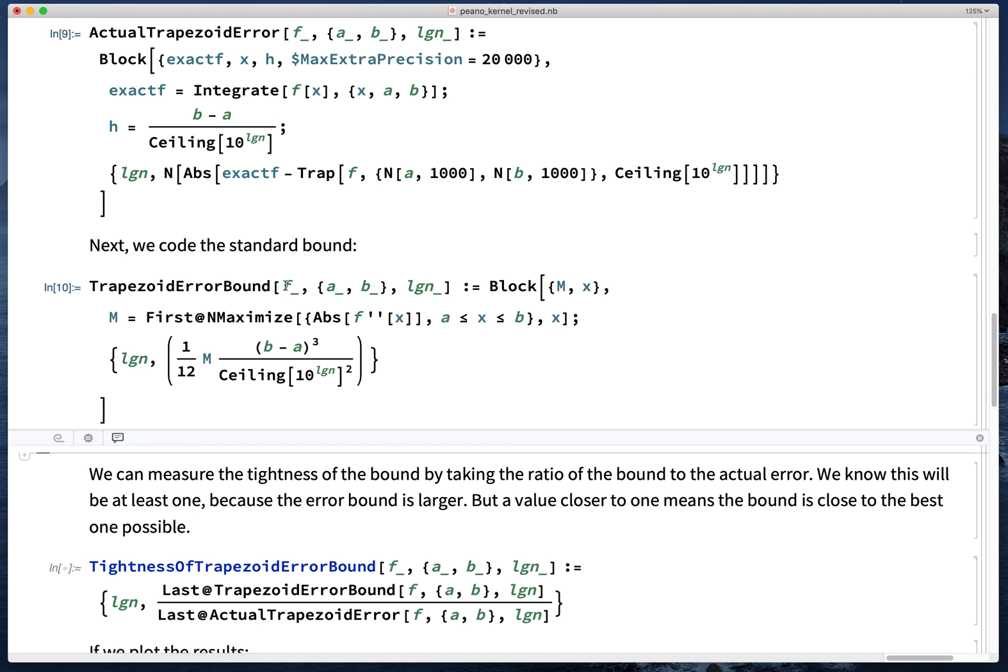Now we're trying to get a sense of how good this bound is. So what we're going to do is take the ratio of the bound on the error to the actual error. This will always be greater than 1 because the error bound is bigger than the actual error. But if it's close to 1, then this bound is pretty tight and can't be improved much. If it's far from 1, then there's some room to improve the bound.